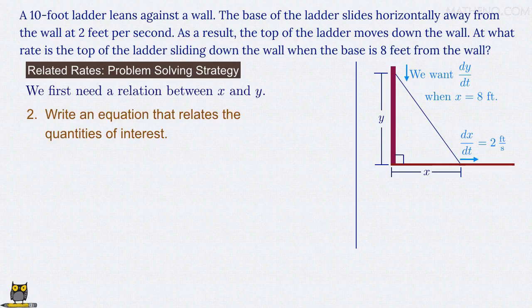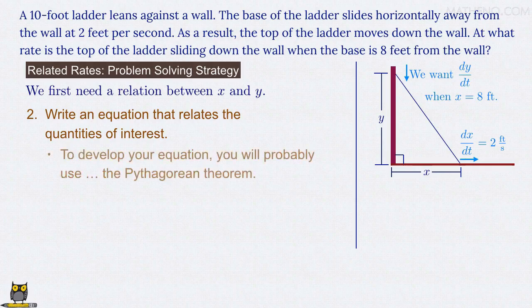In any related rates problem, you'll use one of four approaches that you need to know to complete this step. We cover all of them in our free materials on our website. For this ladder problem, the right triangle we've drawn tells us that we'll use the Pythagorean theorem to develop our equation. You'll find that you use the Pythagorean theorem a lot in your solution to related rates problems, and it should be your go-to choice any time you have a right triangle and you need to relate the lengths of the two legs.